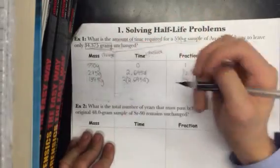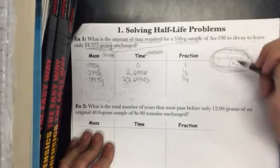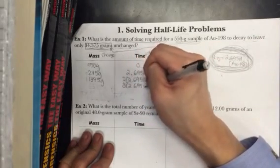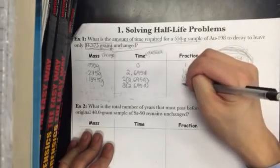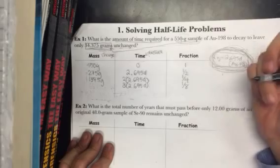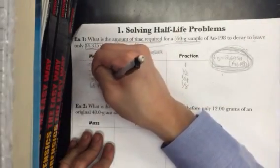So if I go again and I pass another half-life, I have to add another 2.695 days, since yet another half-life has passed, giving me 3 times 2.695 days. I have to, again, halve the fraction, since yet another half-life has passed, giving me 1 eighth. And I have to halve the mass again, giving me 68.75 grams.